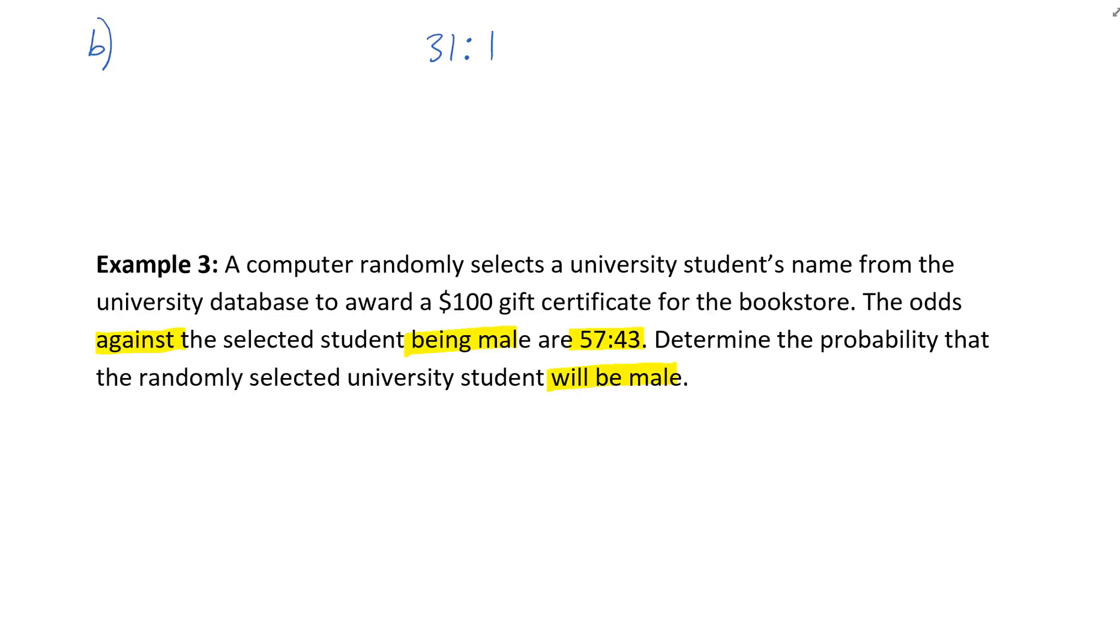We know that 57 is against being male to 43, so I'm going to add those two values together. That means 57 are female, 43 are male, right? So 57 plus 43 gives us the 100 students we're looking at.